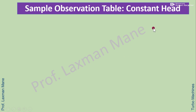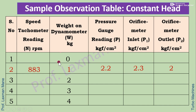A sample observation table for constant head shows columns for speed, weight, and pressure readings p, p1, and p2. Trials are conducted for different loads: no load, 1 kg, 2 kg, 3 kg, and 4 kg. For each load the speed in RPM and corresponding readings of p, p1, and p2 are recorded.